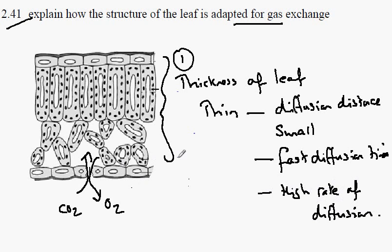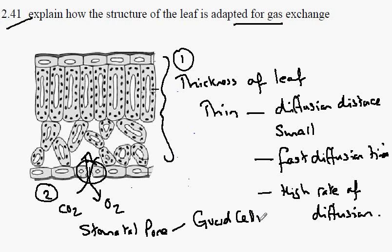The other feature important in gas exchange is the stomatal pore itself, formed by two guard cells which can open and close the pore. So this gives the plant some control over gas exchange.